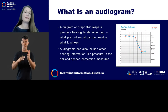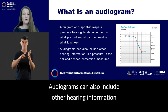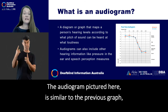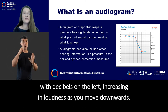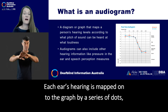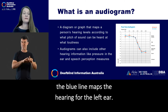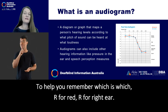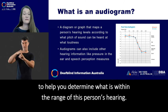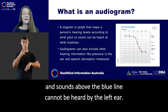What is an audiogram? An audiogram is a diagram or graph that maps a person's hearing levels according to what pitch of sound can be heard at what loudness. An audiogram can also include other hearing information like pressure in the ear and speech perception measures. The audiogram pictured here is similar to the previous graph with decibels on the left, increasing in loudness as you move downwards. Across the top from the left, pitch increases. Each ear's hearing is mapped onto the graph by a series of dots joined together by a line. The red line maps the hearing for the right ear. The blue line maps the hearing for the left ear. To help you remember: R for red, R for right ear.